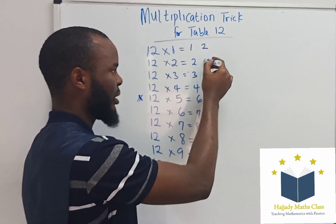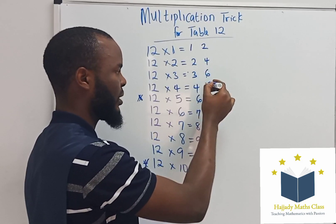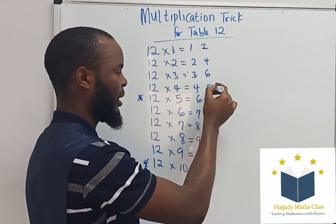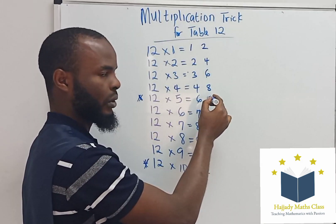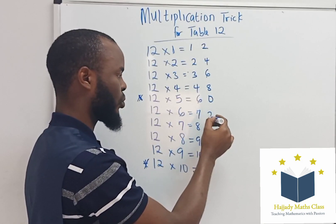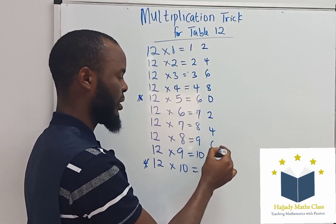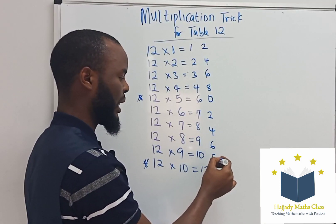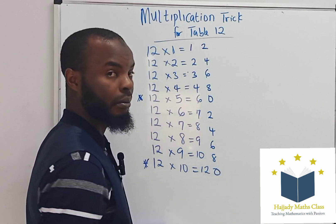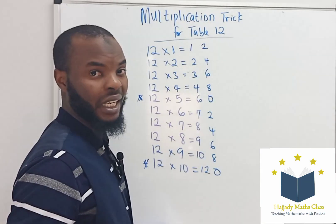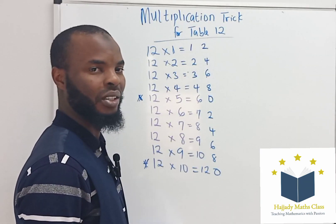4, 6, 8, 0 — then starting again: 2, 4, 6, 8, 0. That's the multiplication trick for table 12.